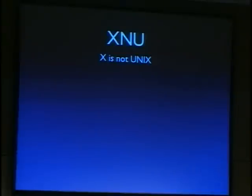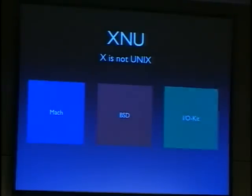Let's look at the architecture of Mac OS X, starting with the kernel, which is called XNU. XNU stands for 'X is Not Unix' — so much for Mac OS X being Unix, but more on this later. The kernel consists of three major parts: Mach, BSD, and the IOKit.